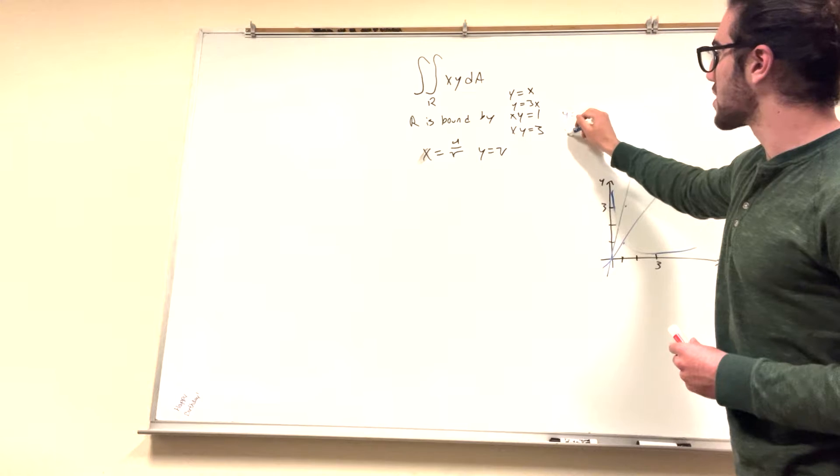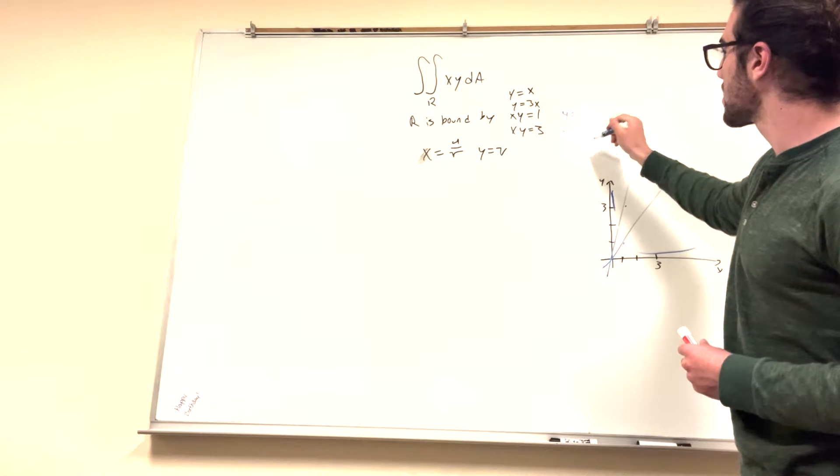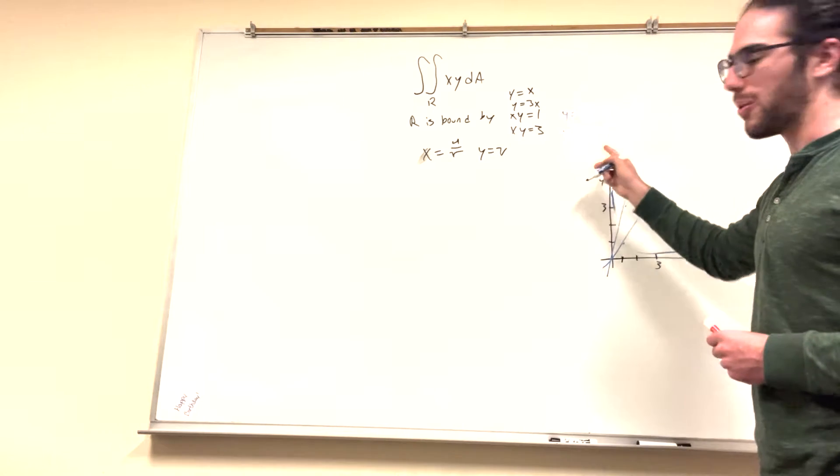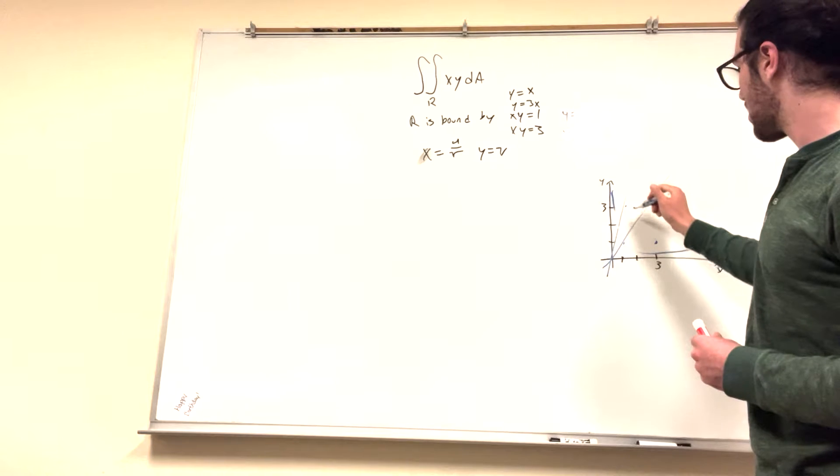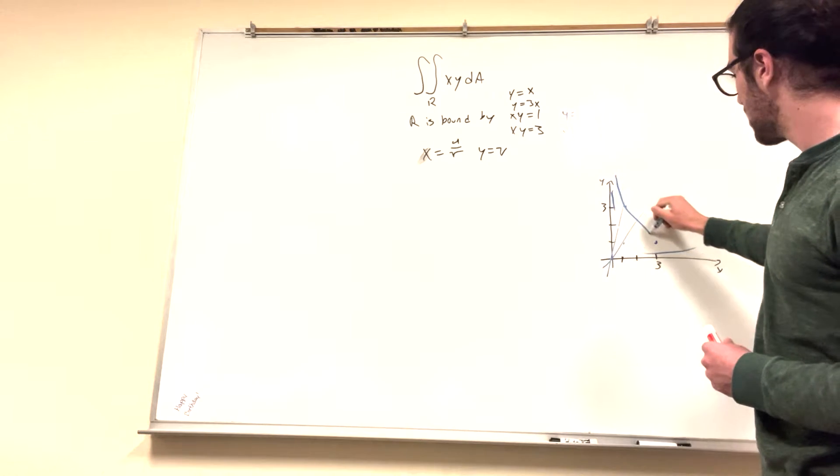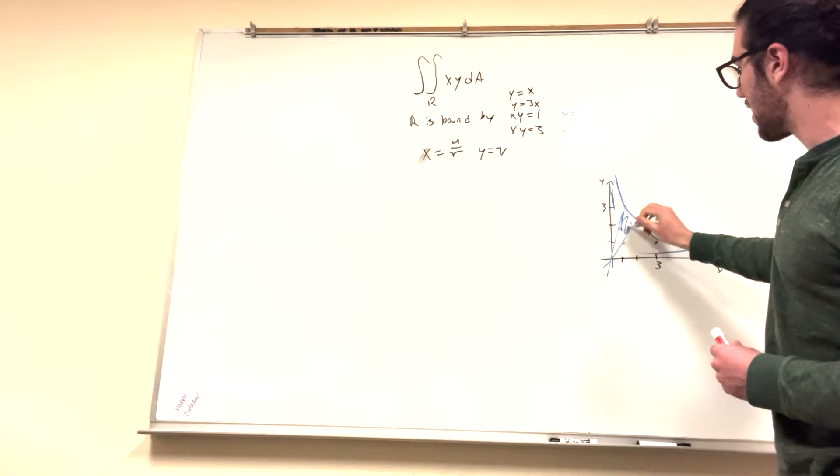And xy equals 3, it kind of looks the same, y equals 3 over x. So if you put in like x equals 3, y equals 1, so you can kind of imagine it's going to look something like this. So it gives us this bound right here, this area.